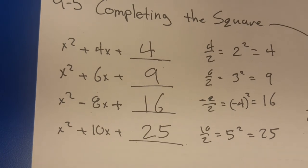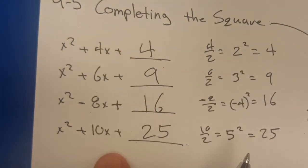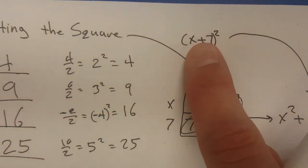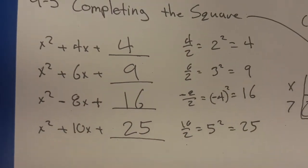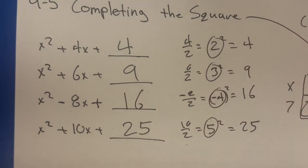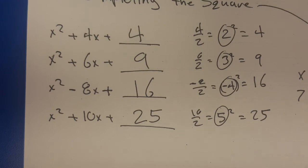That's how you complete the square. The next step is to take these completed squares and to reverse them back into their binomial counterparts. Well, the nice thing is, this number right here can kind of help you also rewrite them as a perfect square.